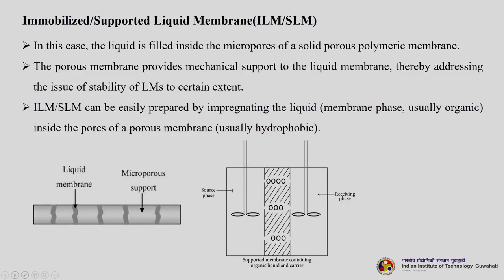The next type is immobilized or supported liquid membrane, called either ILM or SLM. In this case, the liquid is filled inside the micropores of a solid porous polymeric membrane. The porous membrane provides mechanical support to the liquid membrane, thereby addressing the issue of stability to a certain extent. ILM and SLM are easily prepared by impregnating the liquid membrane phase — usually organic — inside the pores of a porous membrane, usually hydrophobic.